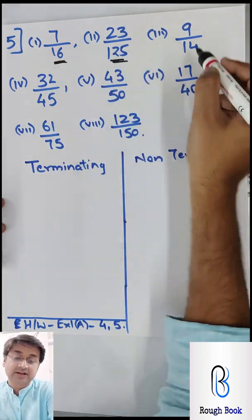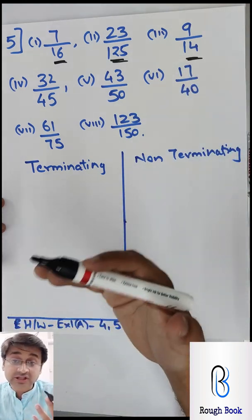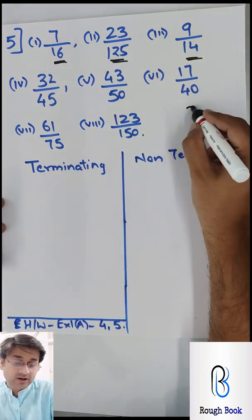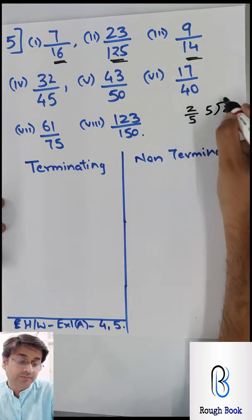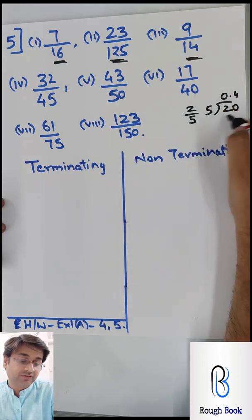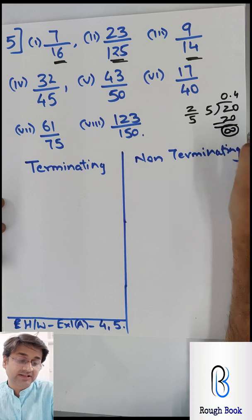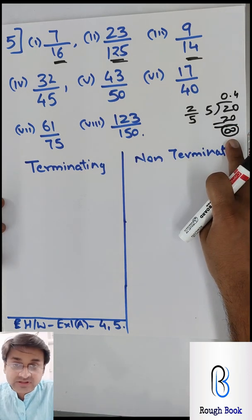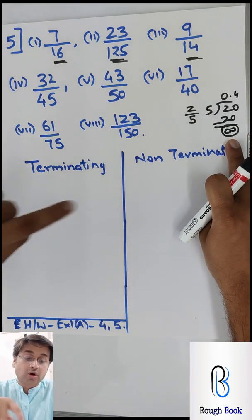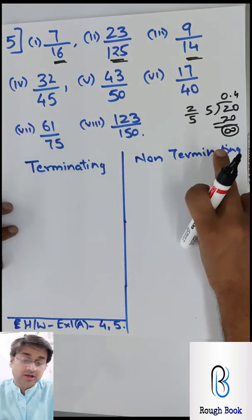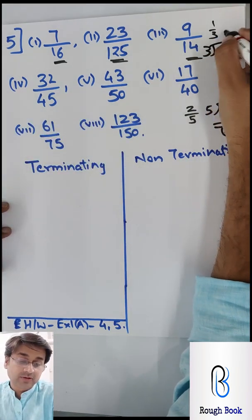They say whether this is terminating decimal or not. Terminating means what? For example, if you have 2 upon 5, and when I divide it, 5 by 2, 0 point, I get 20, 4 times 20, and you get the answer as 0. So when your remainder becomes 0 at any point, you call this as terminating. But for example, 1 by 3 - if I divide 3 by 1, 0 point...